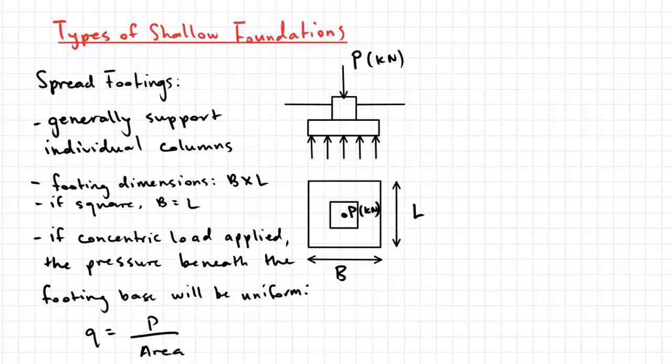If the footing is square shaped, the width and length dimensions will be the same. If a concentric load is applied, the pressure beneath the footing base will be uniform. The pressure is found by dividing the compressive load by the area of the footing.